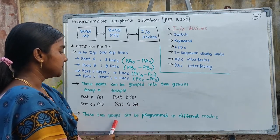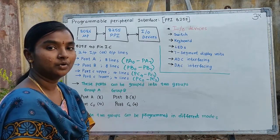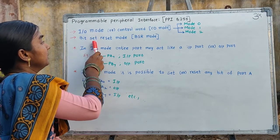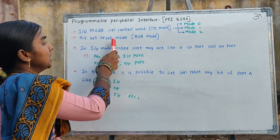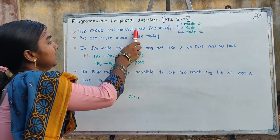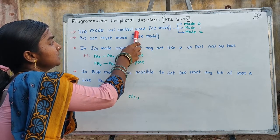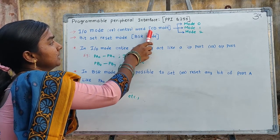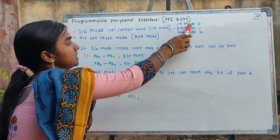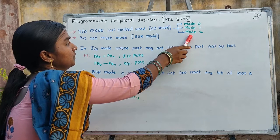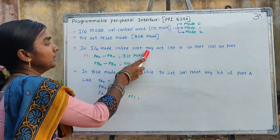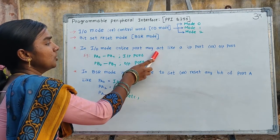These 2 groups can be programmed in different modes. They are IO mode and BSR mode — Bit Set Reset mode. In IO mode, also called control word or CW mode, it can be divided into mode 0, mode 1, and mode 2. If we consider IO mode, the entire port may act as an input port or output port.